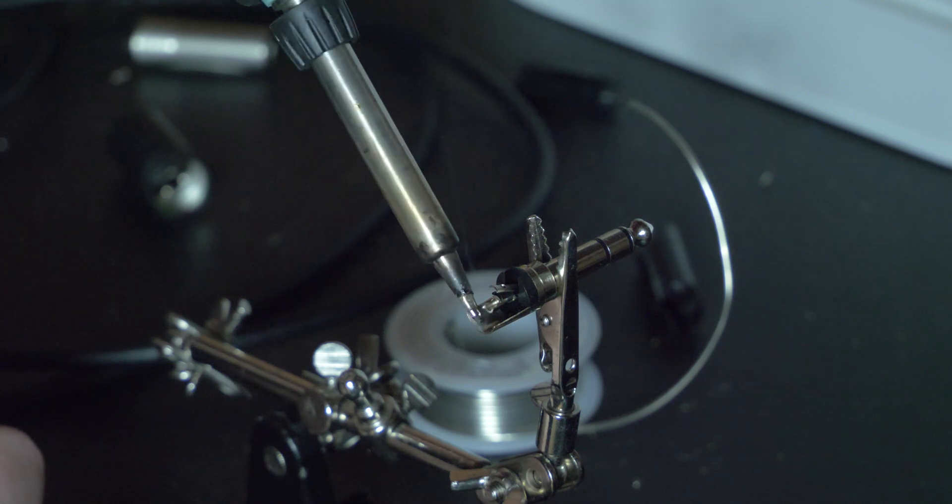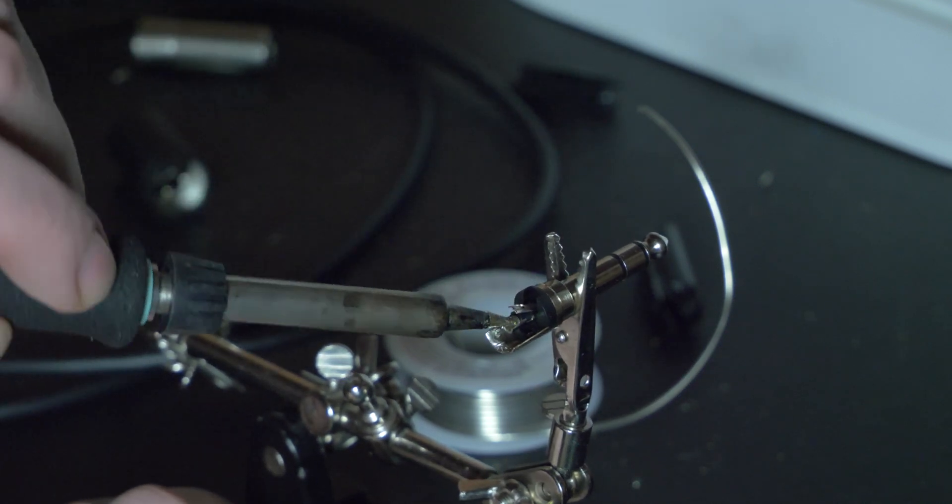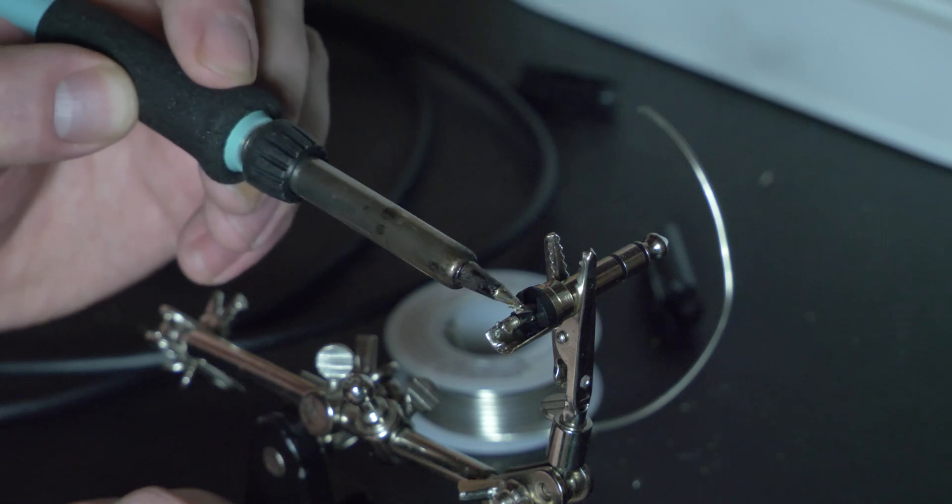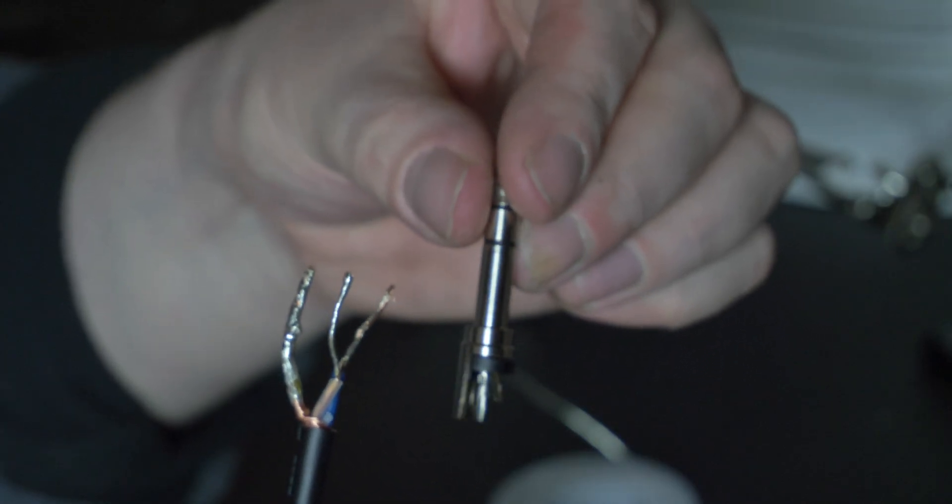Apply a thin bead of solder to the edge of the outer casing, as well as the two central contact points. Finally, trim your ends to the length of each of your contact points.